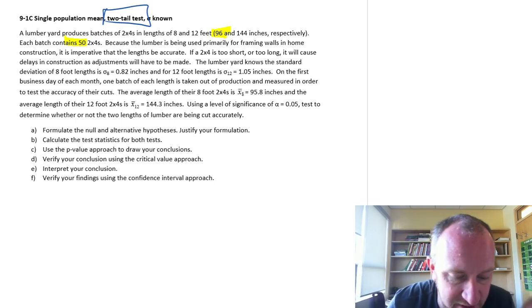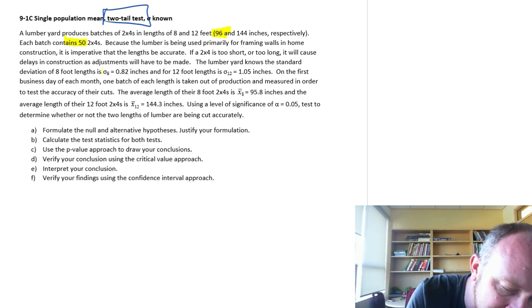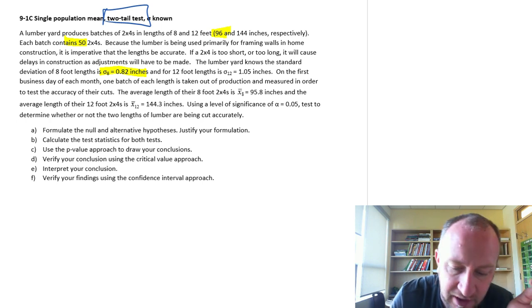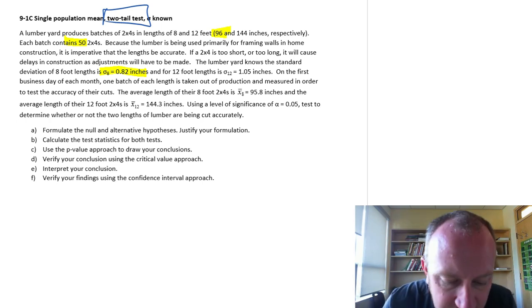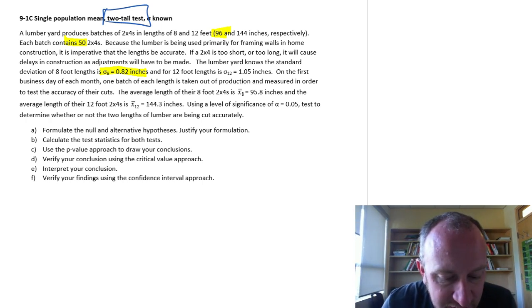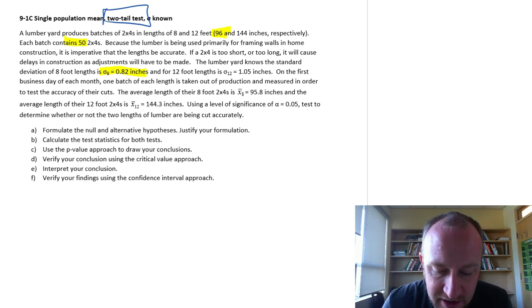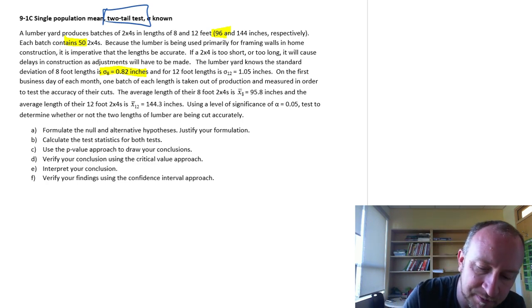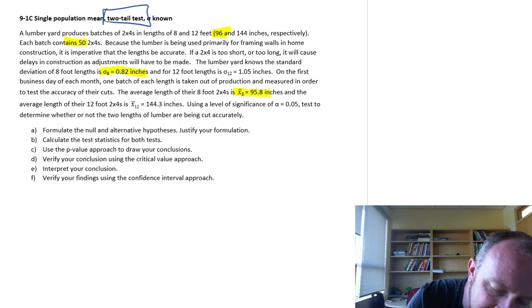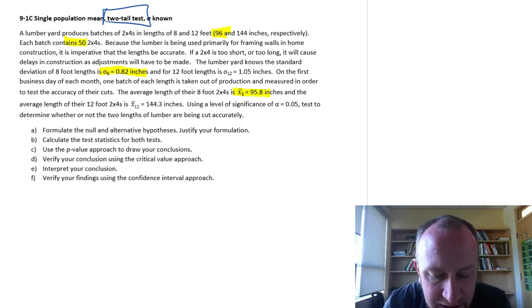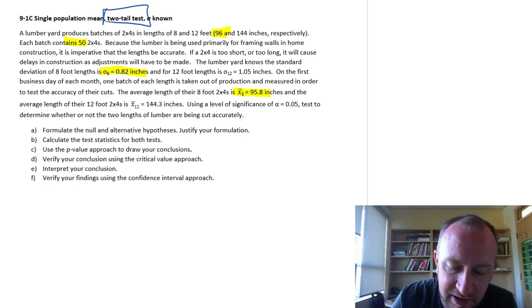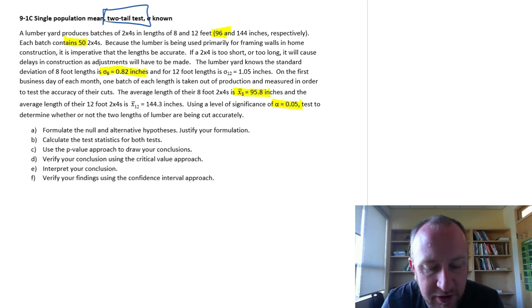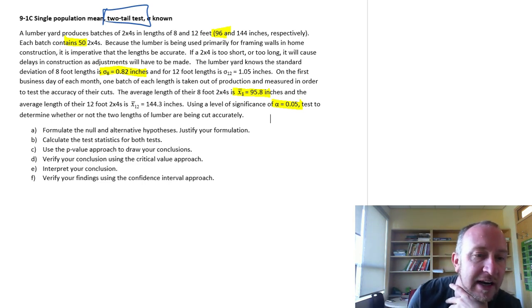So the lumber yard knows the standard deviation of the 8 foot lengths is 0.82 inches. On the first day of each month, we take a batch out of production to measure the accuracy. Here's our sample mean for that 8 foot batch. And we're going to use a level of significance alpha equals 0.05 to test to determine whether or not the two lengths of lumber are being cut accurately.